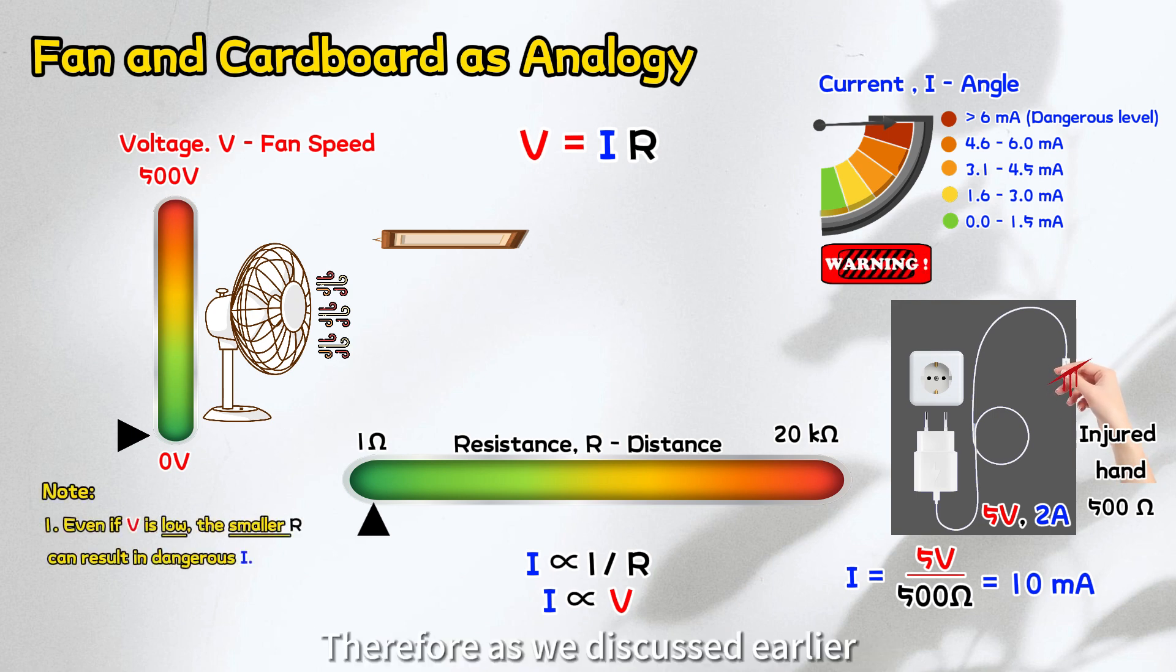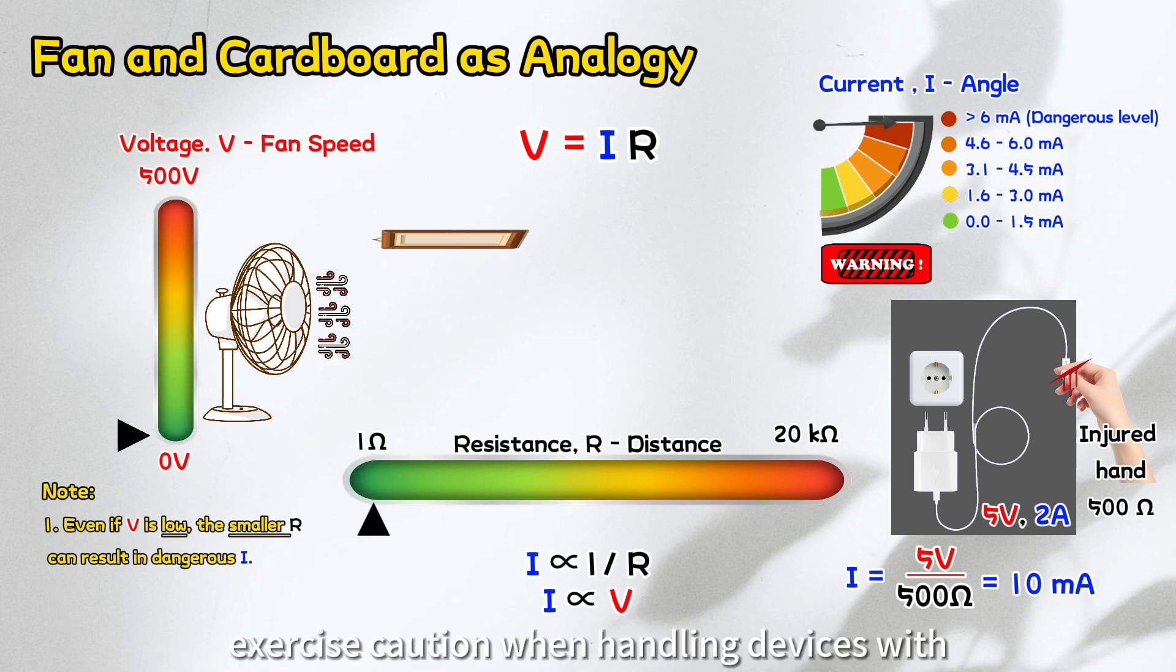Therefore, as we discussed earlier, even though the guideline suggests that 25 volts for children and 50 volts is a safe limit for adults, it's essential to exercise caution when handling devices with voltages lower than this limit, especially in cases of wet skin or open wounds.